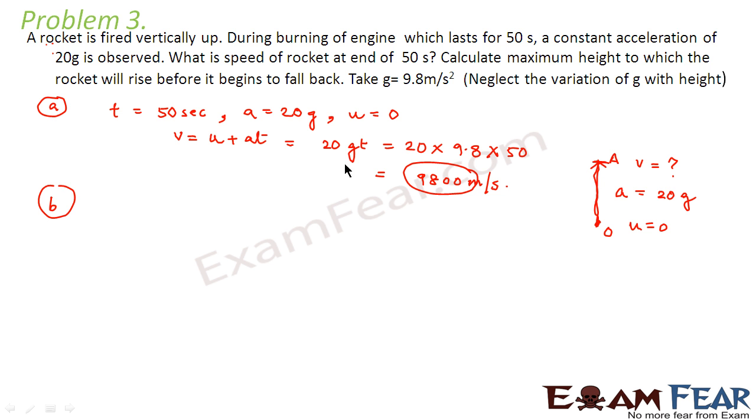Now the second part of the question asks calculate the maximum height to which the rocket will rise before it begins to fall back. Now as soon as the burning of the engine stops what will happen? The rocket will still move some distance upwards and only after that it will start falling down. That is what normally happens. So what would be the difference? The difference would be that from O to A it had a constant acceleration of 20g.